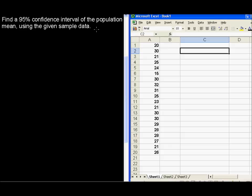Find a 95% confidence interval of the population mean using the given sample data. We have the data over here.